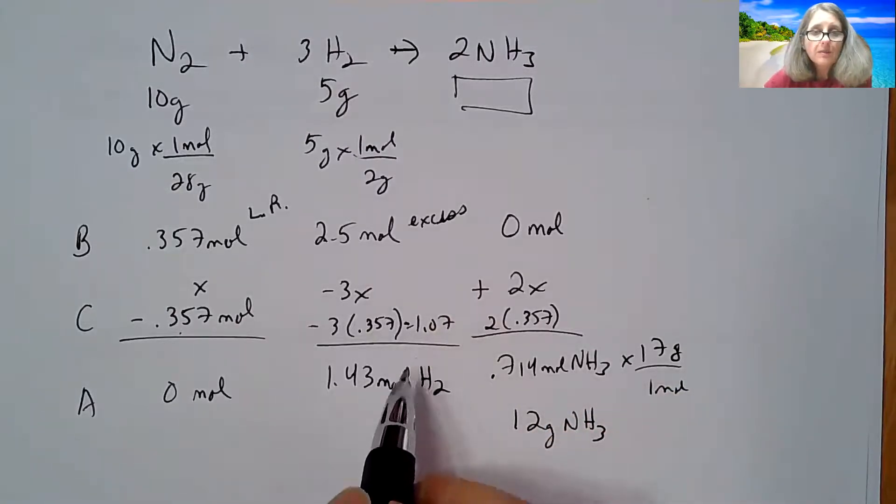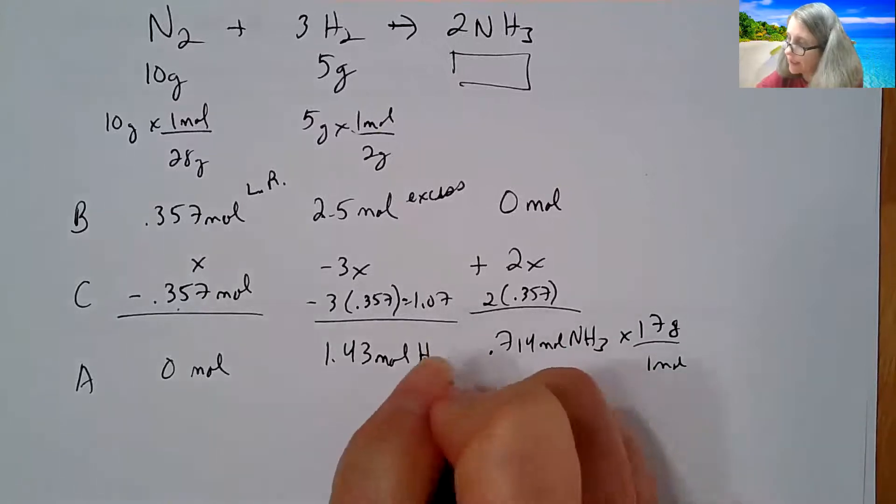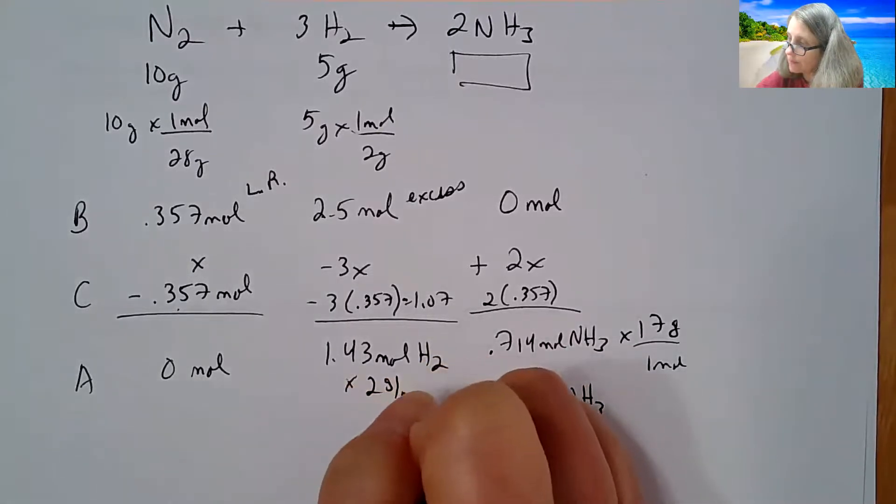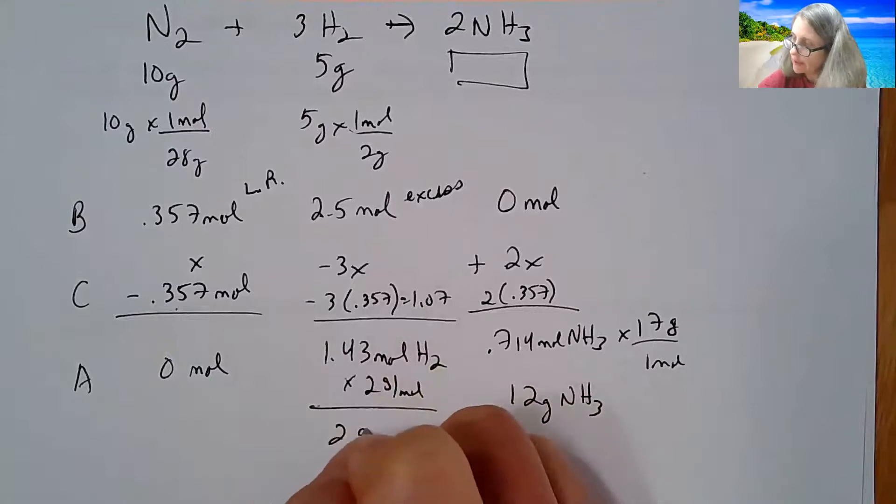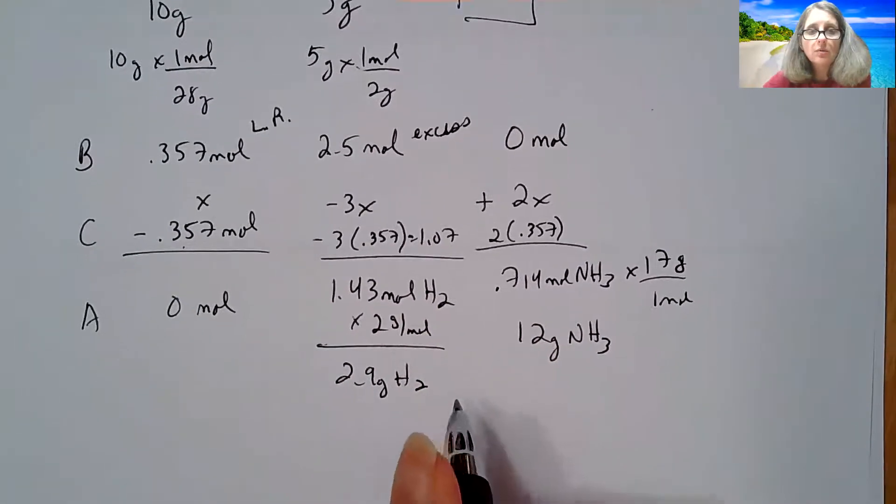How many grams of excess hydrogen? Well, all I got to do is multiply that by 2 grams per mole. And I end up with about 2.9 grams of hydrogen. That wasn't asked in the question, but it's to show you if you have a problem like this in the future.